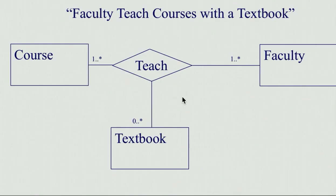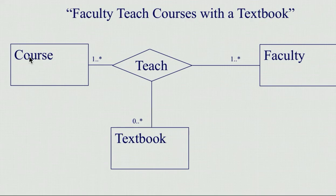I want to add one more thing. Relationships often become tables, particularly in this ternary case — 'teach' will become a table. In this table you'll have the primary key from course, the primary key from textbook, and the primary key from faculty. So the ternary relationship always becomes a table later, which has the primary keys from the other three entities.